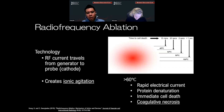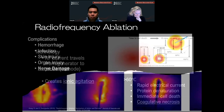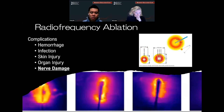This technology is called radiofrequency ablation. It involves using RF current traveling from the generator to a probe, which creates ionic agitation and raises the temperature of the tissue immediately adjacent to the probe. When you get to around 60 degrees Celsius, there is theoretical protein denaturation and immediate cell death. The main mechanism of action is coagulative necrosis. The complications for radiofrequency ablation include hemorrhage, infection, skin injury, organ injury, and nerve damage.